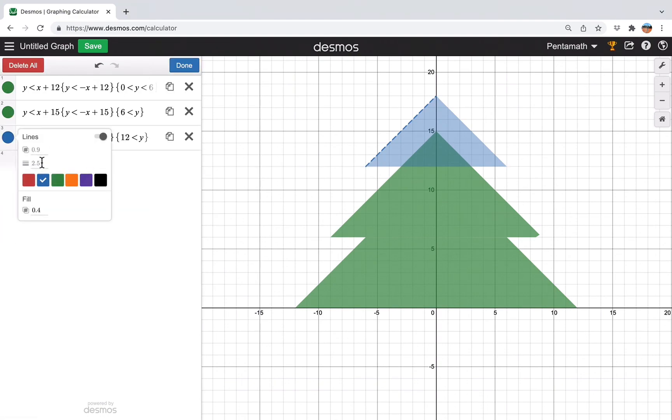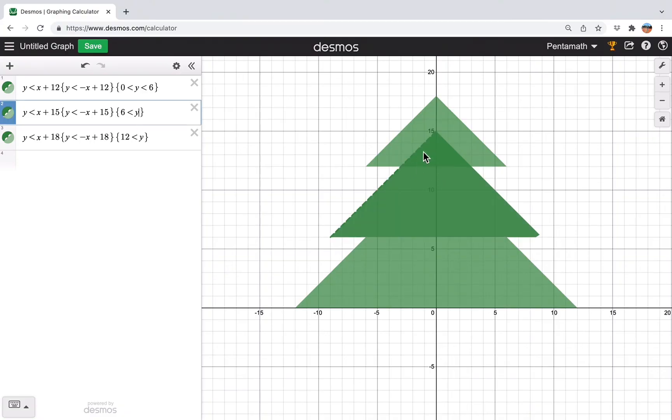And then we change the style. So that's going to be 0, green, and fill with 0.7. And again, there's some overlap. So we'll fix that up by just changing that to must be less than 12. There we go.